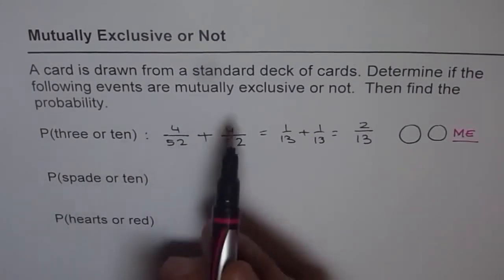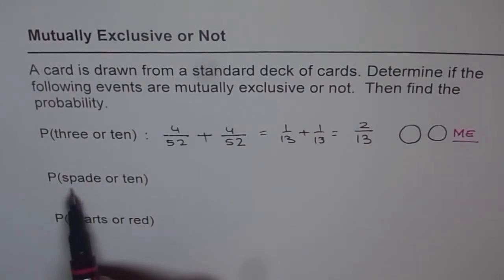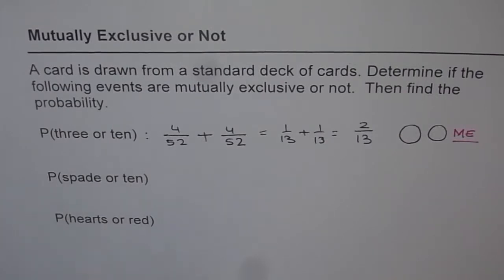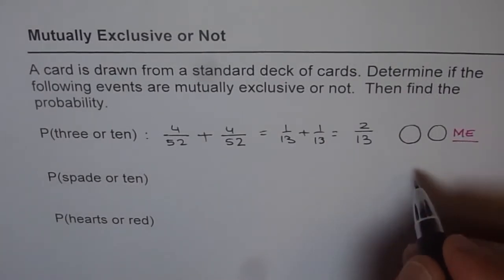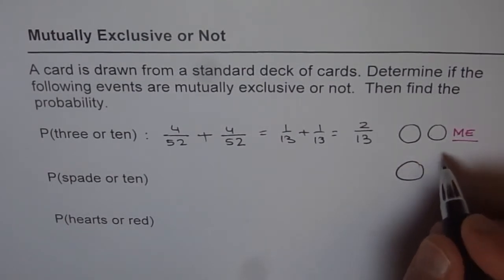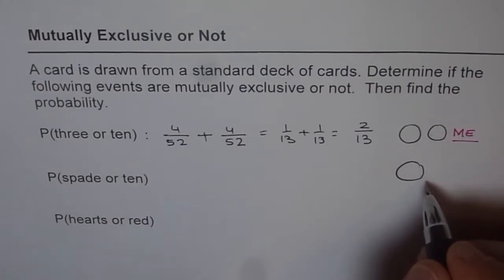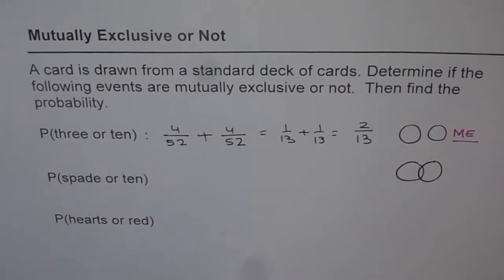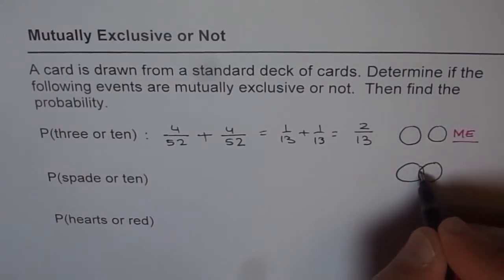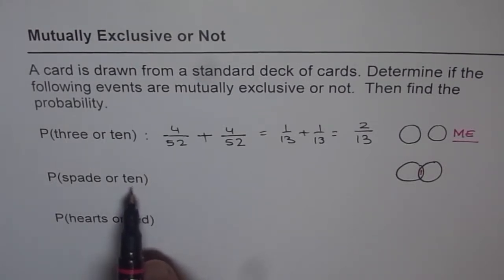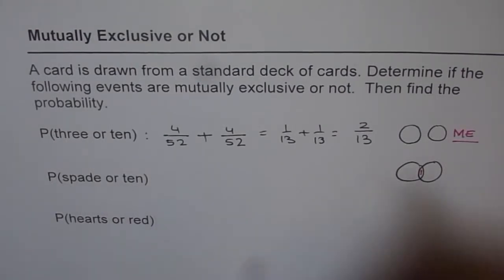The second example is drawing a spade or a ten. Is it mutually exclusive or not? Think about it. In a deck of cards there are four tens, and one of them will be the ten of spades. So there is an overlap — the ten of spades is common to both events. Therefore, this is not mutually exclusive.